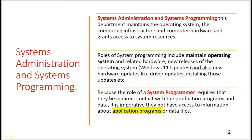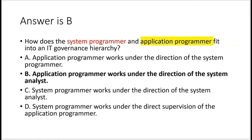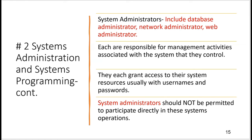Practice question: How does the system programmer and application programmer fit into an IT governance hierarchy? A) Application programmer works under the direction of the system programmer — no, they're on two different teams. B) Application programmer works under the direction of the system analyst — yes. The software engineer works under the direction of the system analyst, who is the boss on the yellow team. C) System programmer works under the system analyst — no. D) System programmer works under the application programmer — no. B is correct.